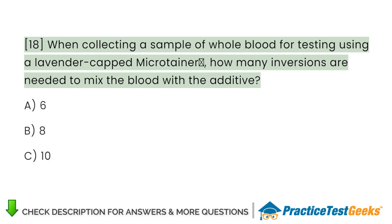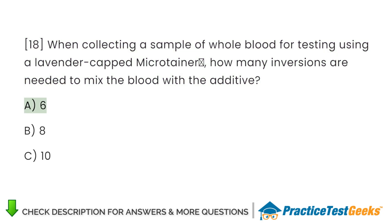When collecting a sample of whole blood for testing using a lavender-capped microtainer, how many inversions are needed to mix the blood with the additive? A. 6. B. 8. C. 10.